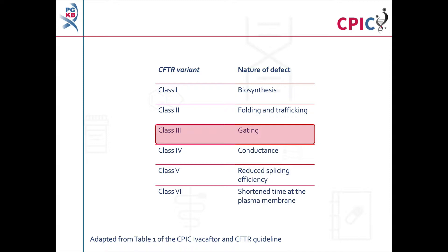Note that the efficacy of Ivacaftor can be affected by the presence of some other CFTR variants. For example, if a patient carries one class 3 variant and a class 1 or class 2 variant, which prevents the CFTR protein from localising to the cell membrane, the clinical response to Ivacaftor may be reduced.